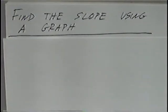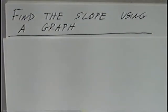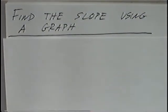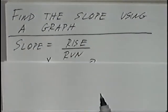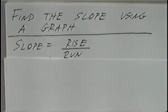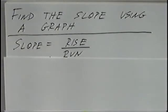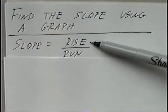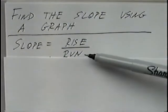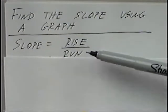The title of the last section today is: Find a Slope Using a Graph. This will be the same method we used to find the rate of change, except instead of a table, we'll use points on the graph. The definition of slope is rise over run. Rise is how many spots the line goes up — or if it decreases, how many spots it goes down. Run is how many spots it goes to the right.